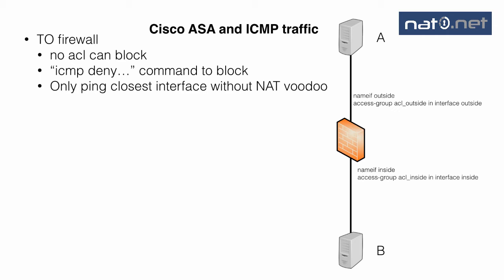Normally you can only ping the closest interface — the nearest interface from the source. That means host A can only ping the outside interface, not the inside, and host B can ping the inside interface IP address and not the outside. In order to change that, you would need to create some really weird NAT statements in the firewall, so normally just access the nearest interface from the source.